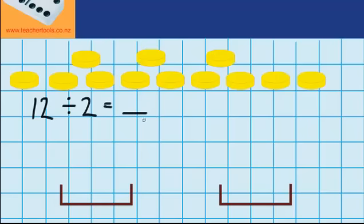So I can see that half of these gold coins are going to have to go to the first pirate, and the other half are going to go to the second pirate. And I know that half of 12 is 6, and I can check that using my repeated addition. 6 plus 6 equals 12.